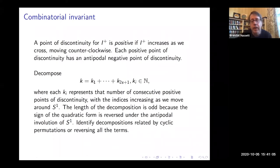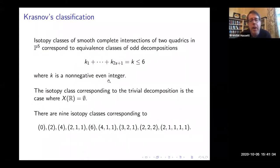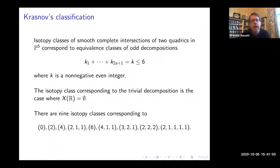This invariant is an odd decomposition — not quite a partition because I care about order — of these integers K. I identify two decompositions if they're related by cyclic permutations or reversing the order. We get a description of the possible isotopy classes. I learned this from a paper by Krasnov; I suspect it goes back much further, but I found Krasnov's organization useful for our purposes. Krasnov gives this invariant of complete intersections of two quadrics, and one gets nine isotopy classes for complete intersections of dimension three corresponding to these sequences of numbers.